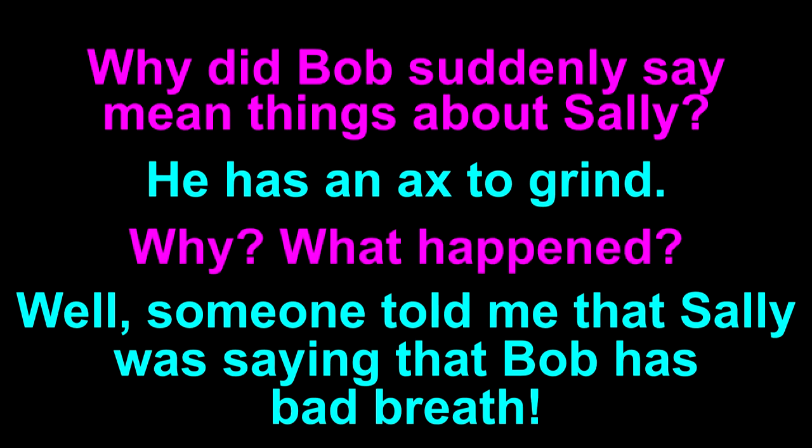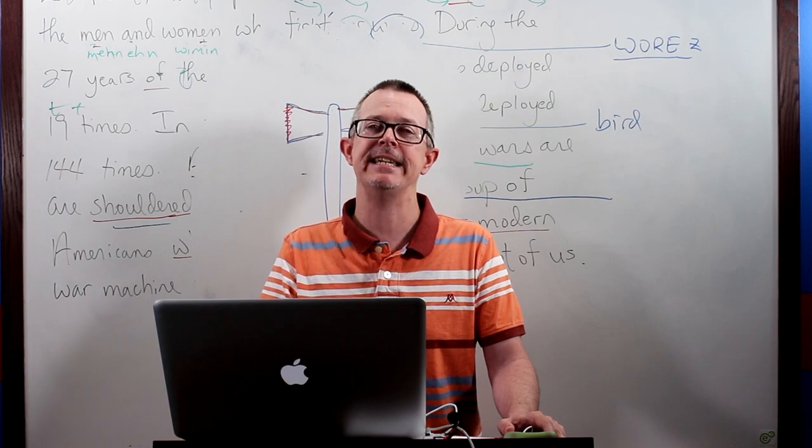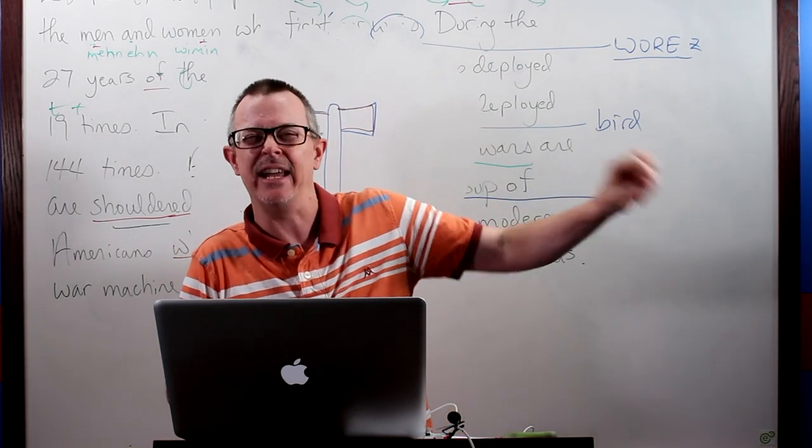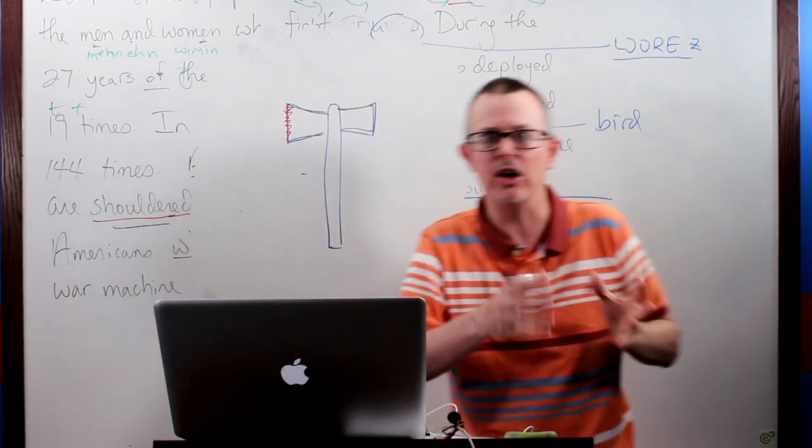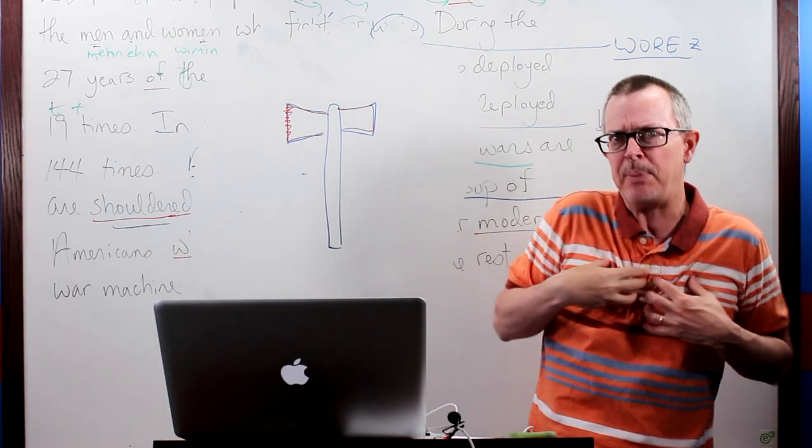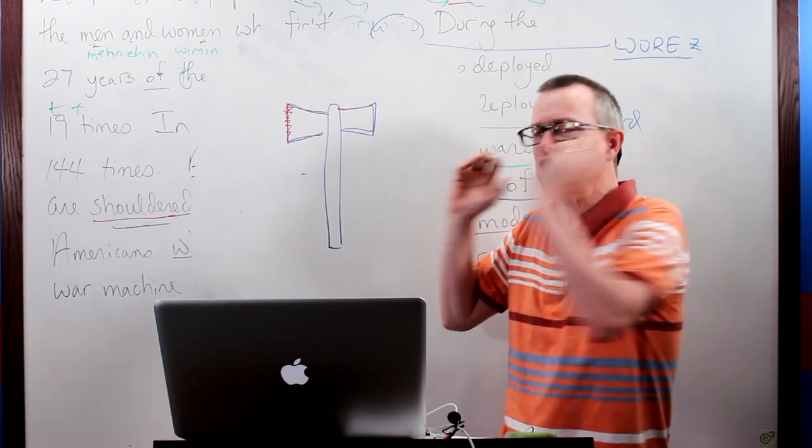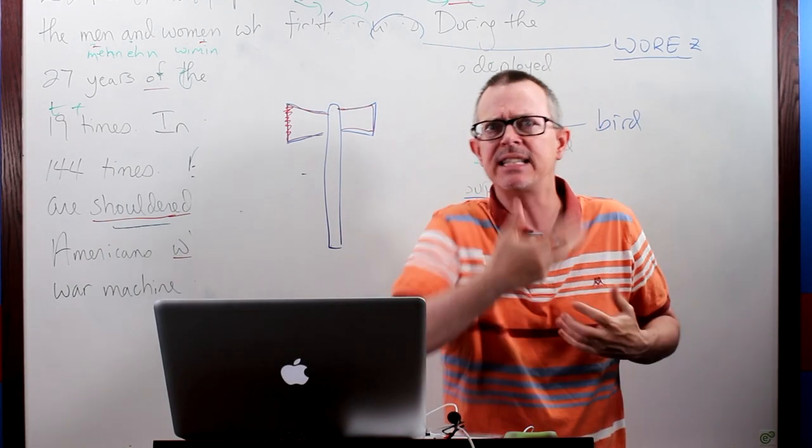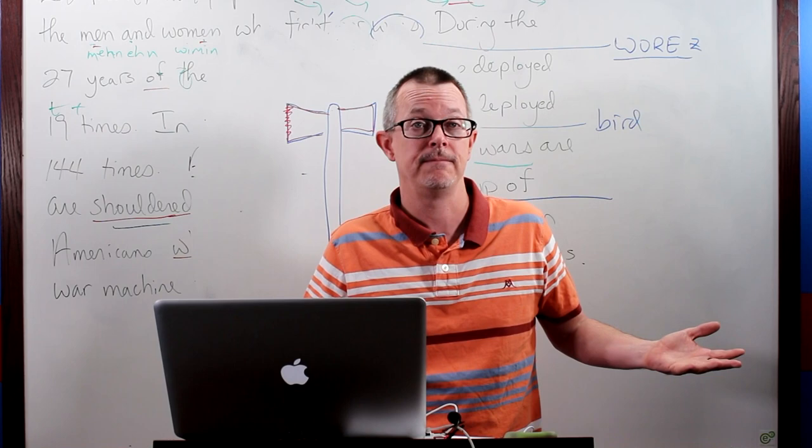Why did Bob suddenly say mean things about Sally? Oh, he has an axe to grind. Why? What happened? Well, someone told me that Sally was saying that Bob has bad breath. So at the company, some situation, you know, person A says something bad about person B. And then later, person B hears that bad information. And person B is angry at person A. So person B has an axe to grind with person A. So he could go and attack and have a fight. Or he could just say bad things about that person. Why is he saying bad things? He has an axe to grind. This is the idea.